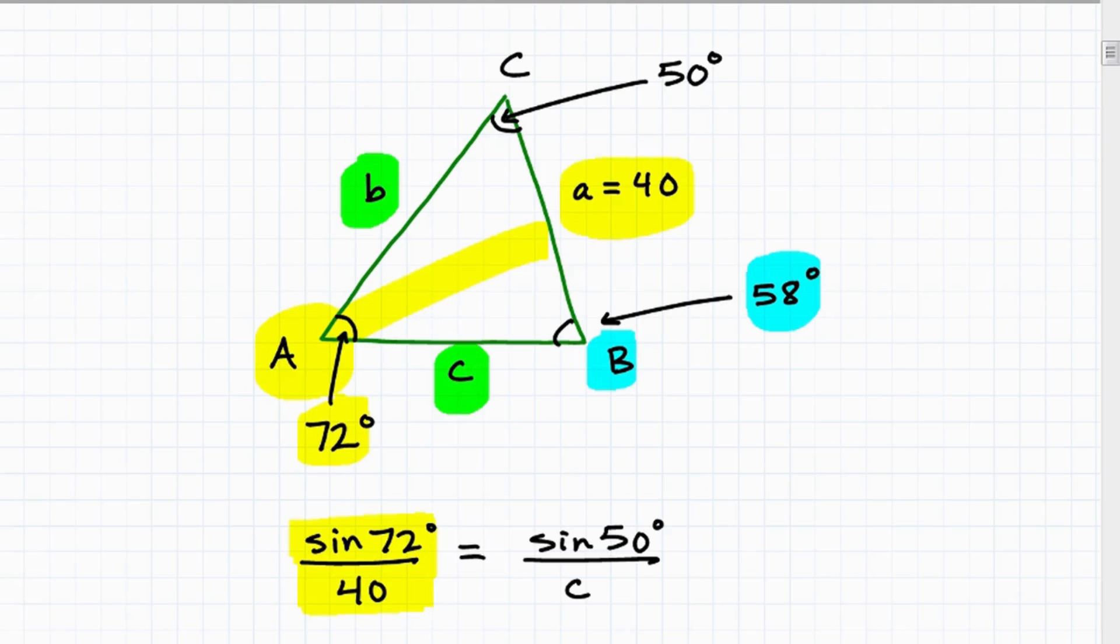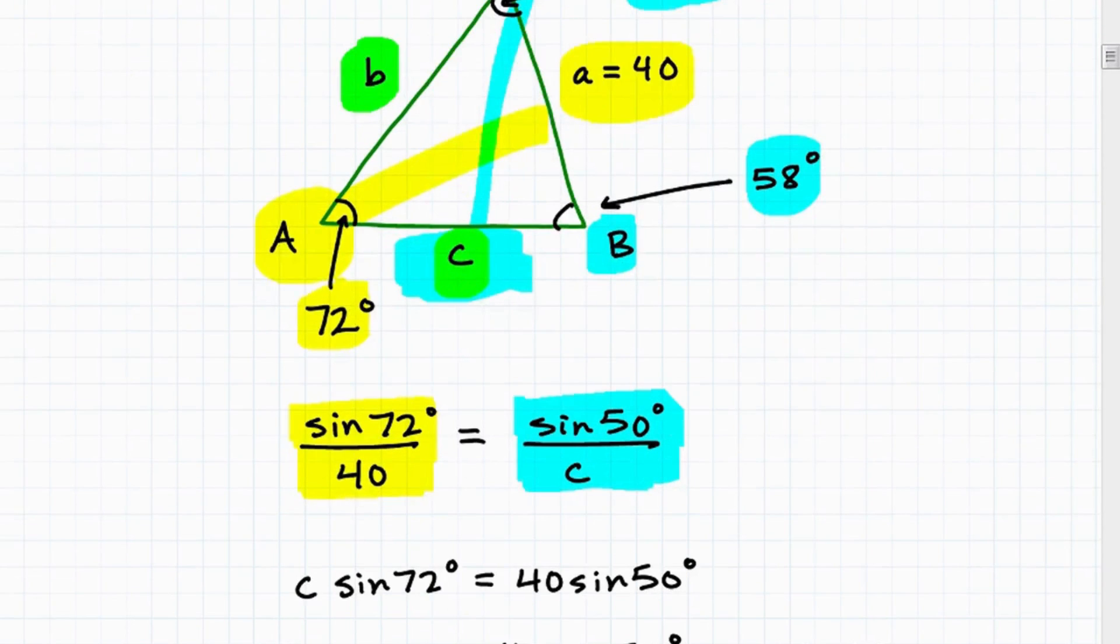And now that I have all the other angles, I can go get the remaining sides, which are going to be B and C. So let's go ahead and find length C first. We have to use 50 degrees. Okay. So sine of 50 degrees with its respective side C, right here. Okay. Once I set that up, I'm going to go ahead and solve for C.